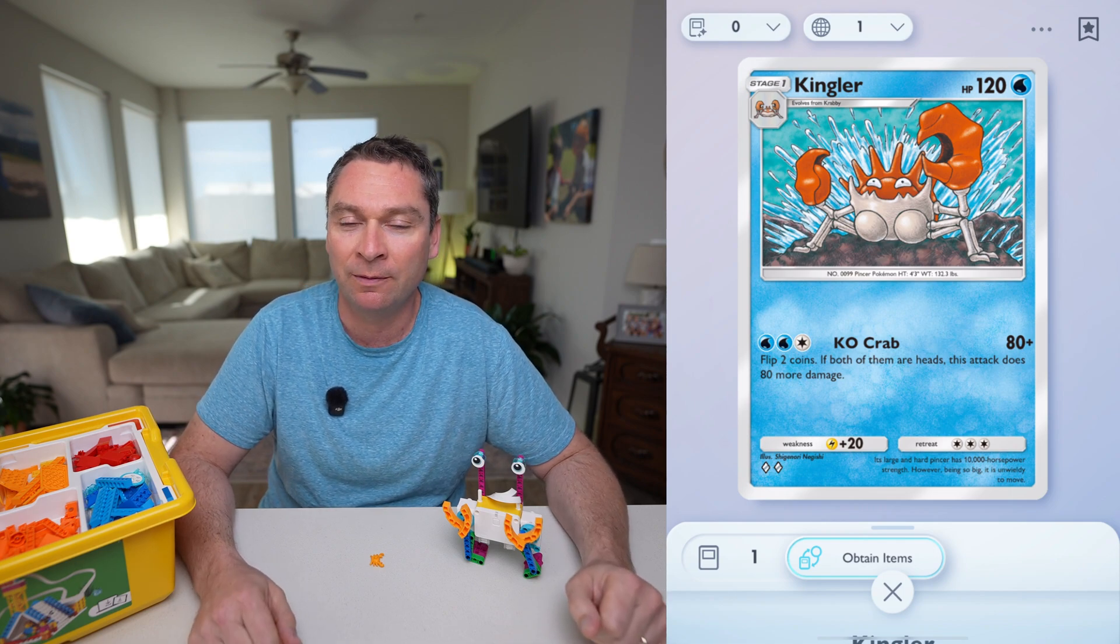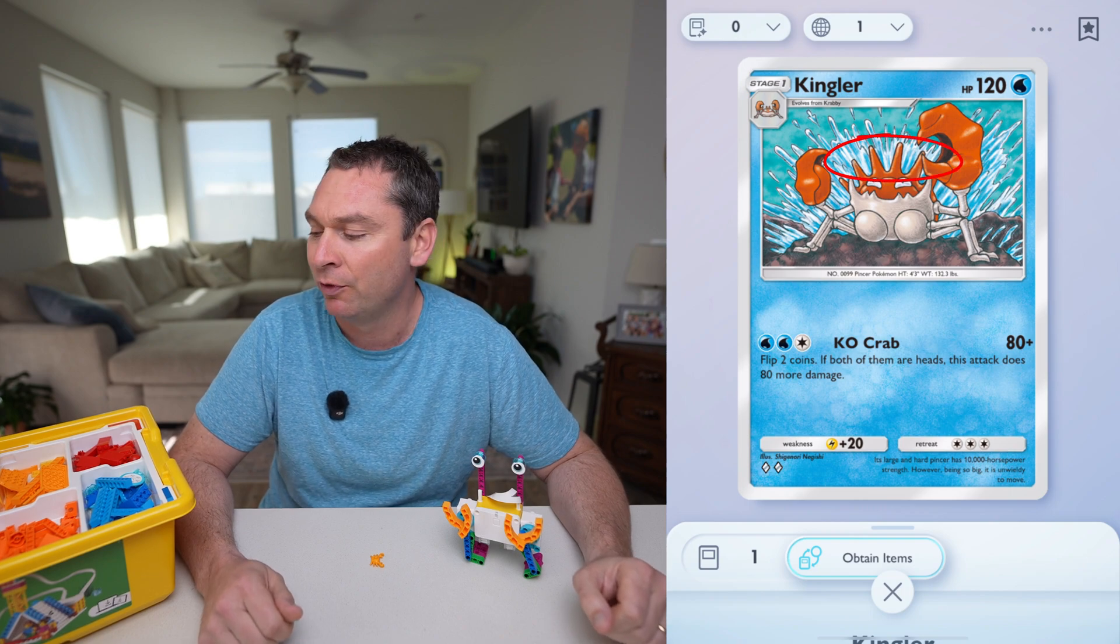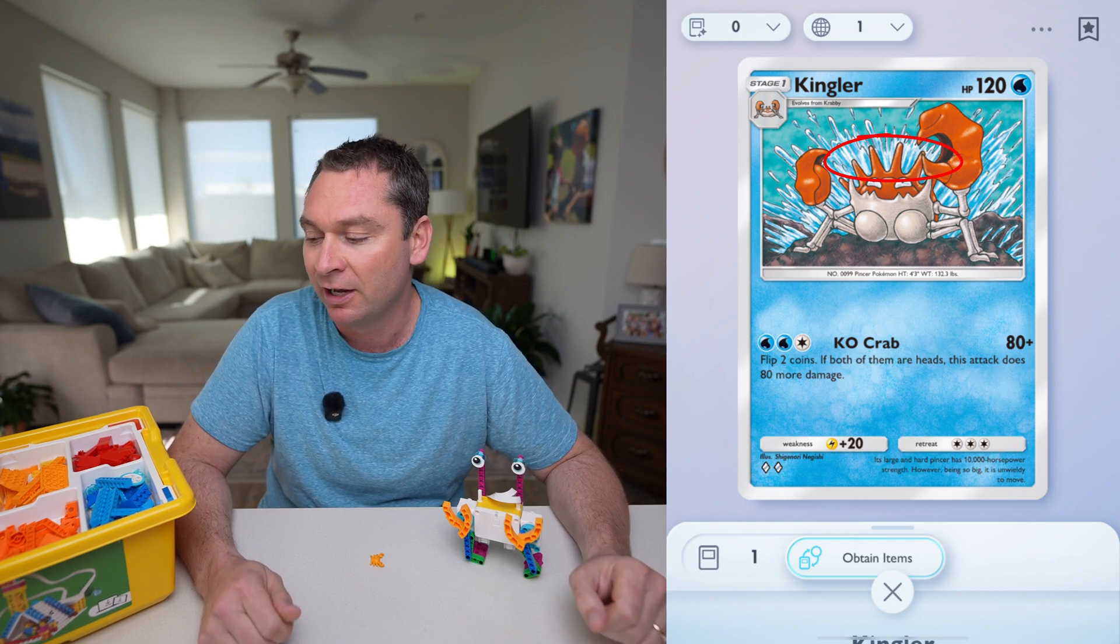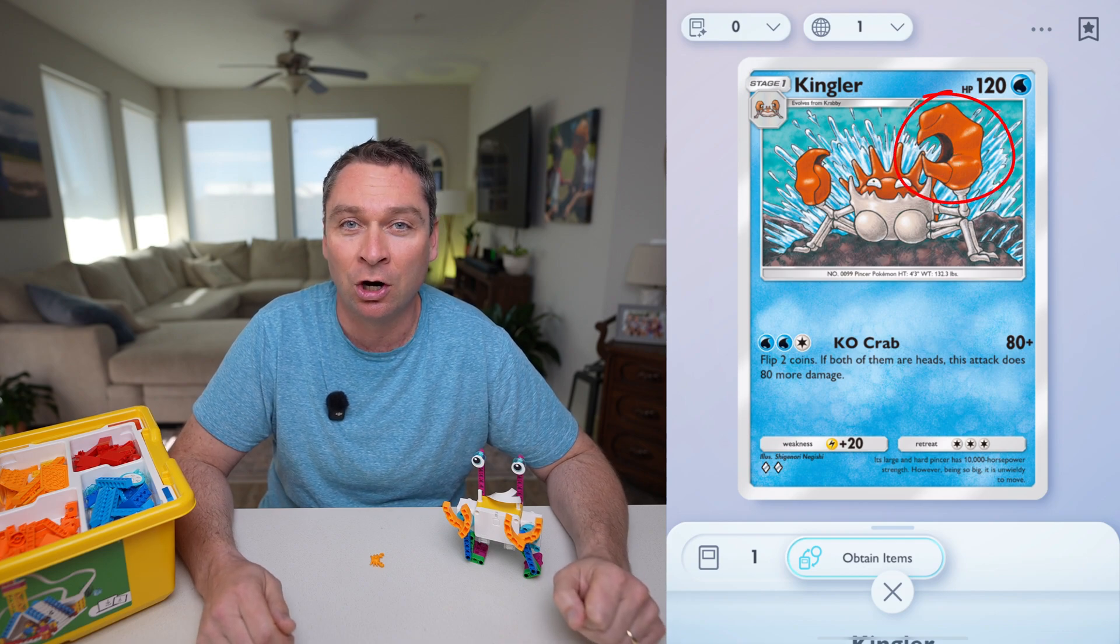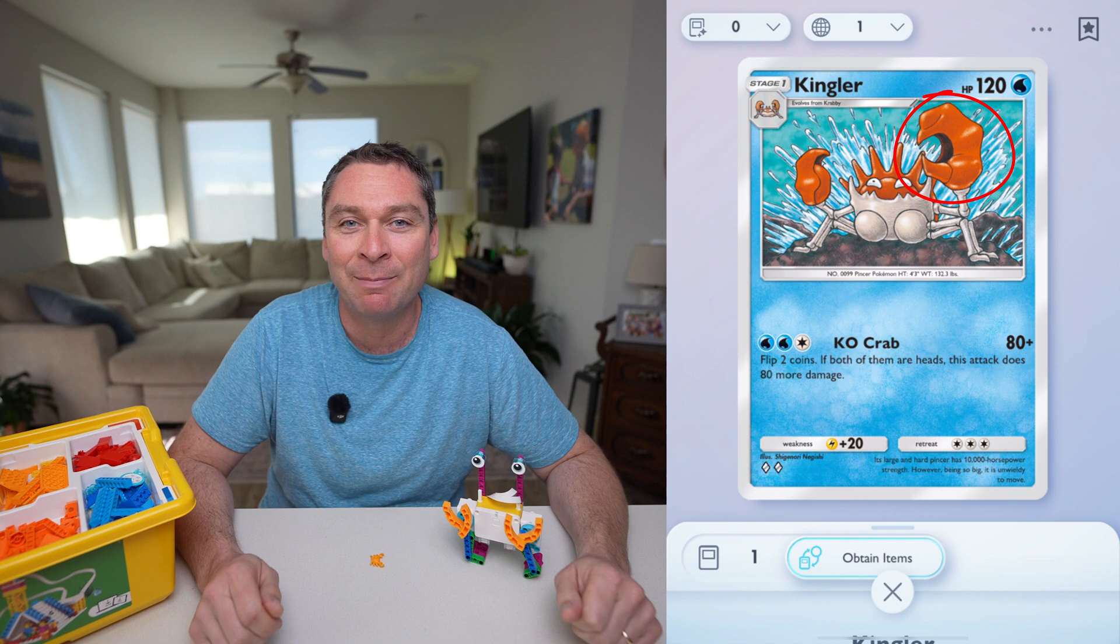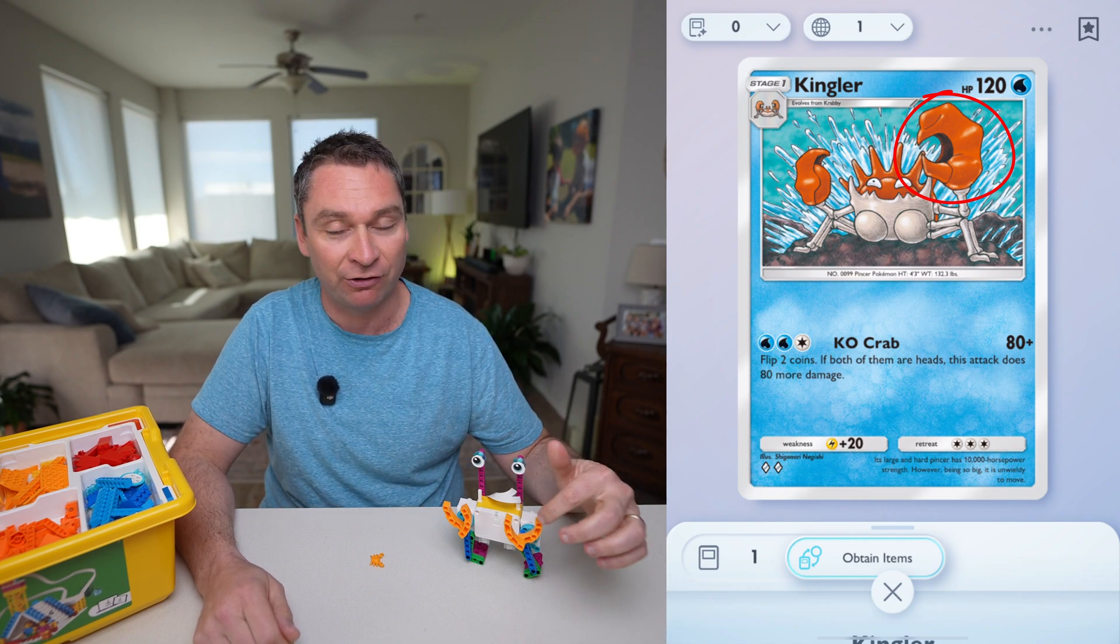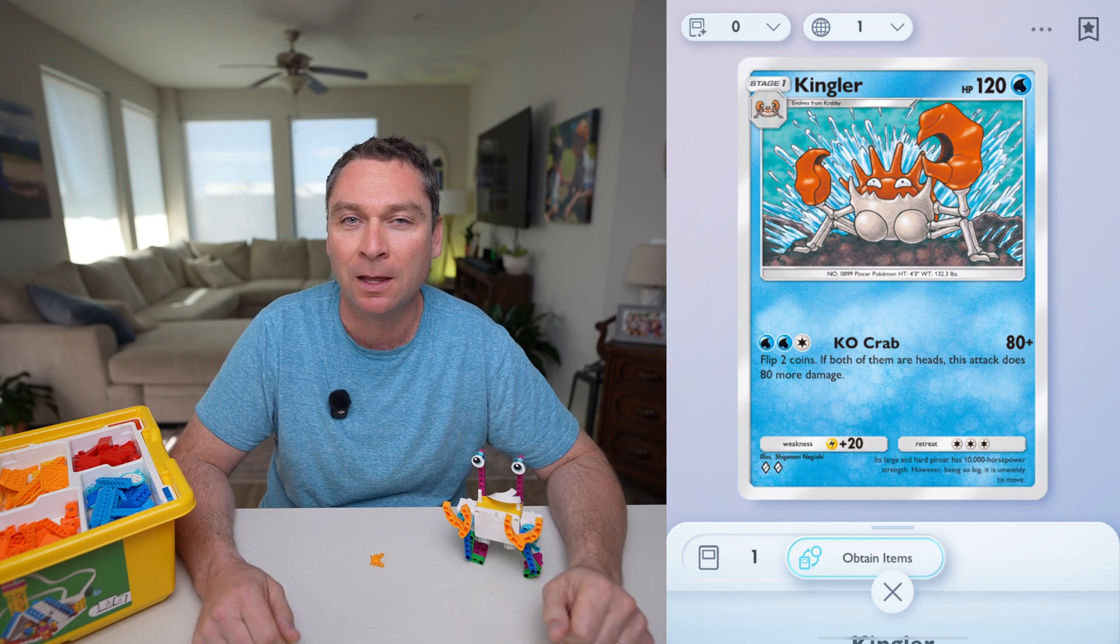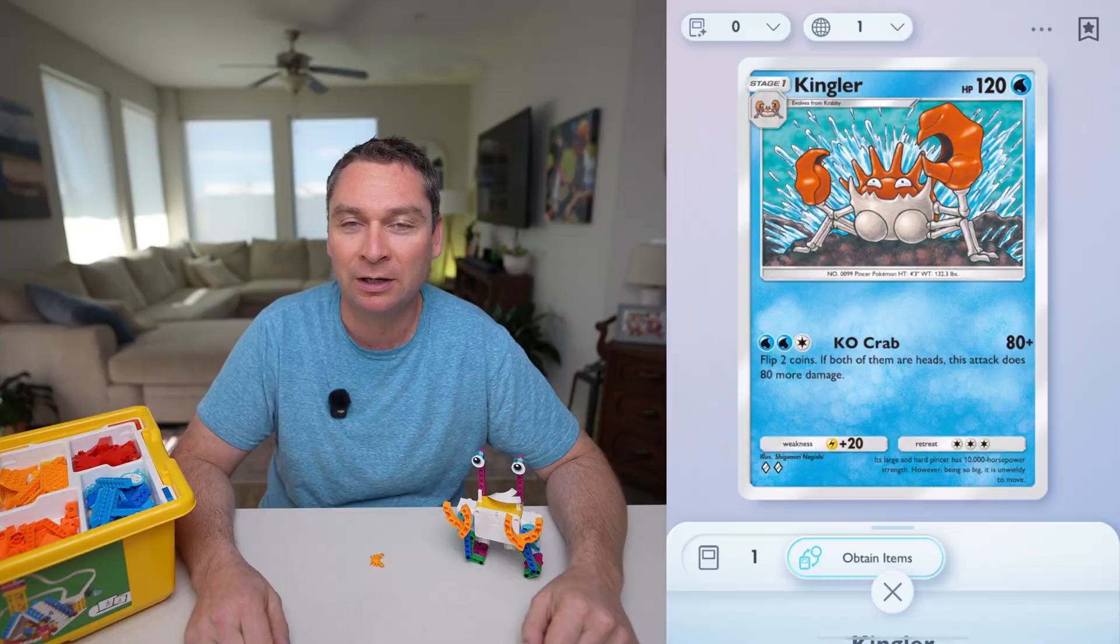I noticed on Kingler, he's got a crown with several points. I bet I can build that using some of my orange pieces that go up into a point. I also noticed this very large claw. I bet I can build that by using some orange pieces that are even bigger than these curved yellow pieces I have. Try to build an upgraded version of Krabby, the evolved form Kingler.